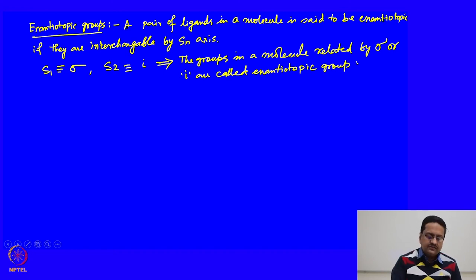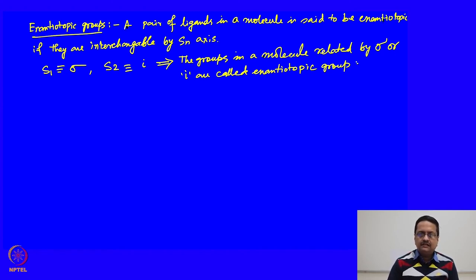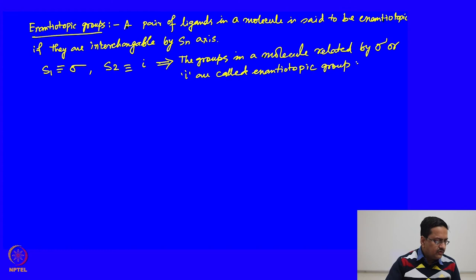When you substitute those enantiotopic groups one by one by another atom, you generate two molecules which are enantiomers. From the products generated as enantiomers, we call those two atoms or pairs of atoms as enantiotopic atoms. Let us see this with an example.